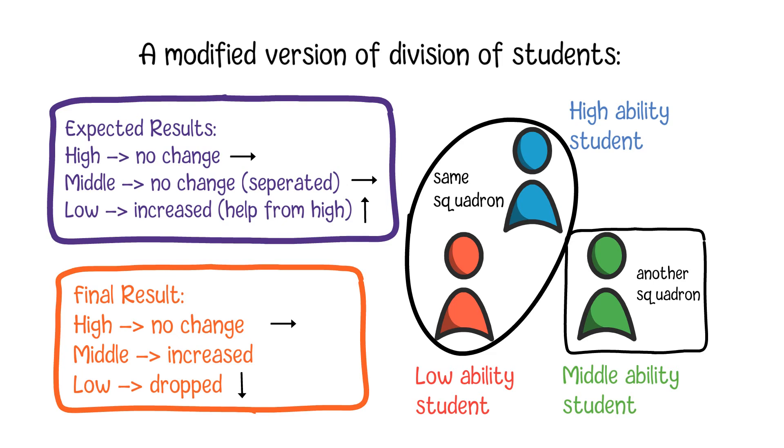In comparison, the scores of those middle-ability students who were allocated separately into another squadron increased significantly. Why do we get this seemingly incomprehensible result?